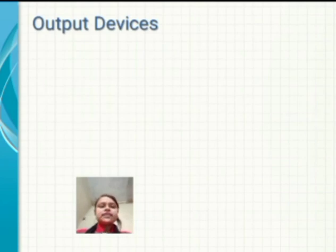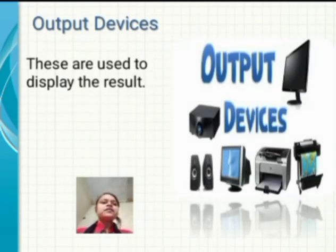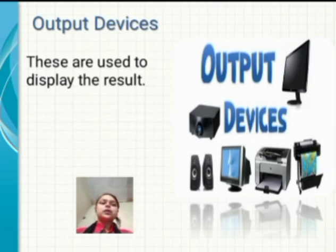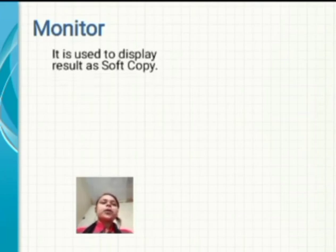Next are output devices. These are output devices — they are used to display the result on screen. Monitor: a monitor is used to display the result as a soft copy.